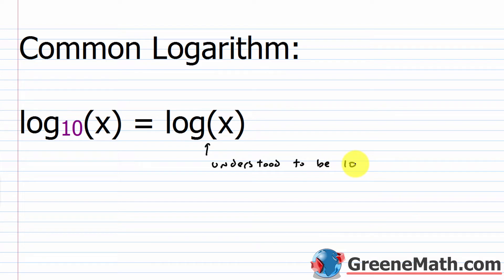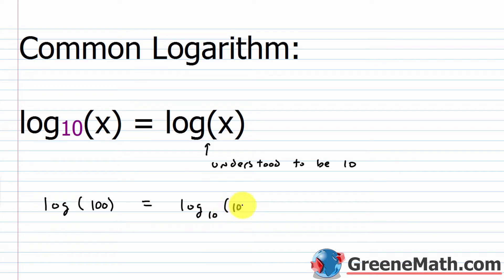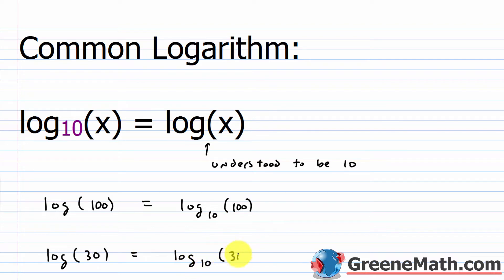So something like log base 10 of x could be written as just log of x — the base is understood to be 10. If I saw something like log of 100, this is understood to have a base of 10, so this is really log base 10 of 100, and we all know this is 2 — 10 to the second power gives me 100. Or log of 30 is understood to be log base 10 of 30.